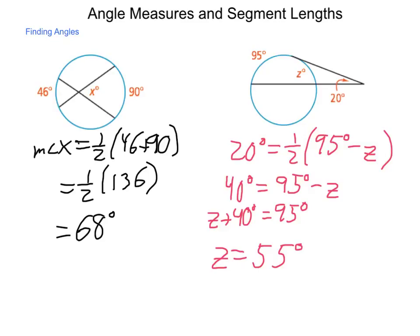So we can find a lot of information about angles simply by knowing a few pieces and locating where the angle is formed. Remember, if it's formed inside of our circle, it's the average of the two arcs. If it's formed outside of our angle, or outside of our circle, it is the average of the difference between those two arcs.